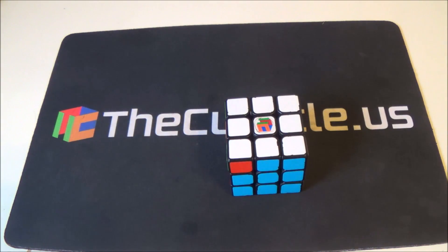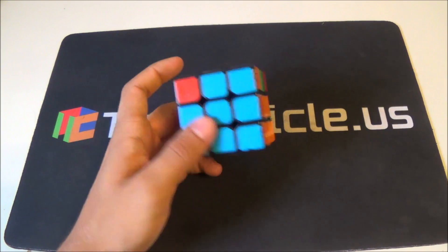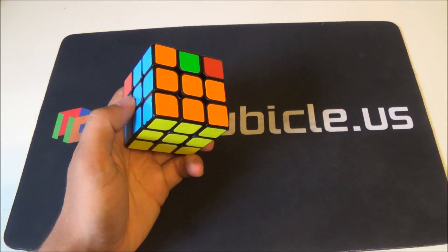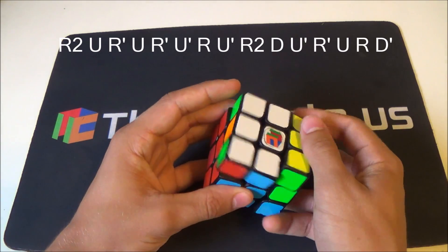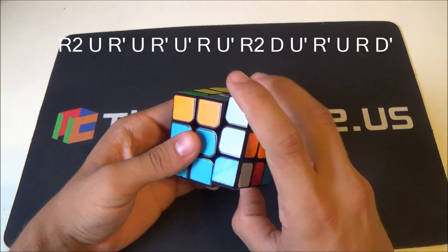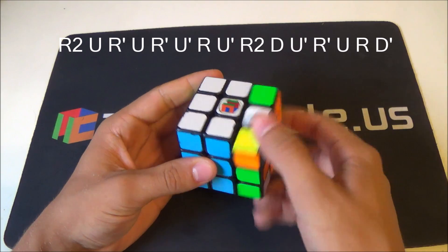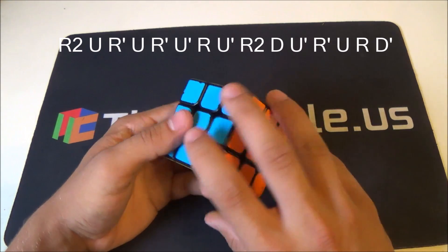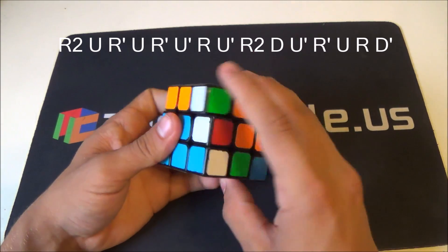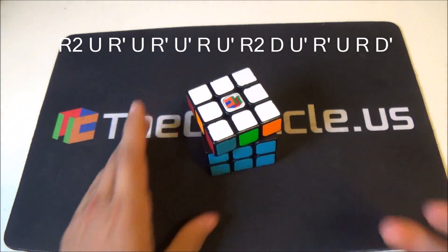There's also an RUD option for this G-perm, which I have never learned and so I won't execute it fast for you, but I will do it slow for you. Like that. I'm just reading it off right now.